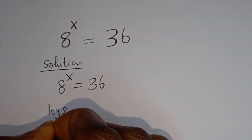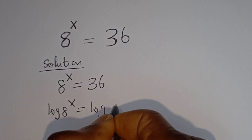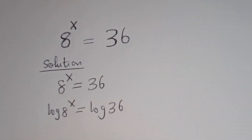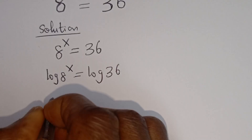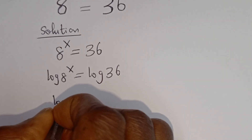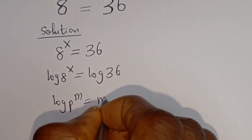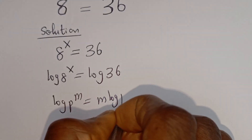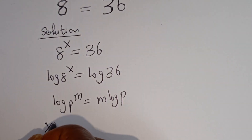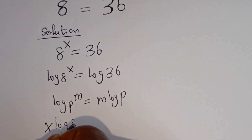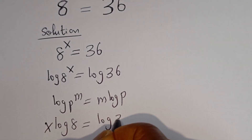Log of 8 to the power of x is equal to log 36. Take note of this: if you have log p to the power of m, this is equal to m log p. Then this can be written as x log 8 is equal to log 36.